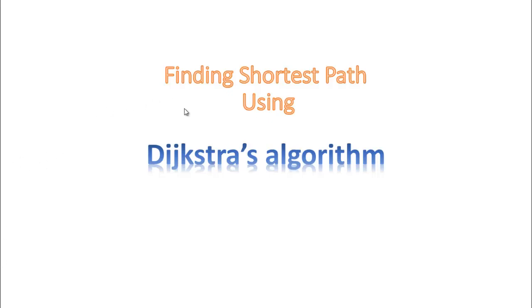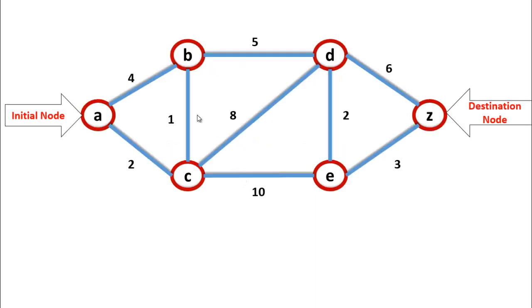Hello viewers, today's lecture is on finding the shortest path using Dijkstra's algorithm. This is the example. Now we will find the shortest path from A to Z, where A is the initial node.